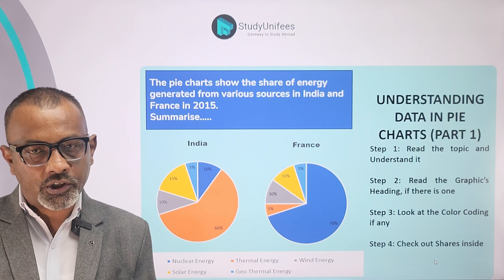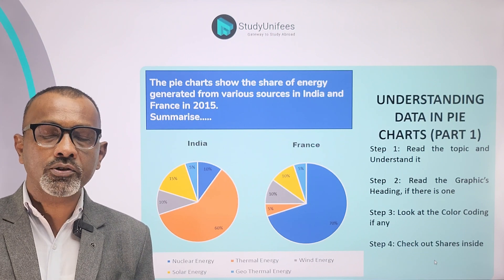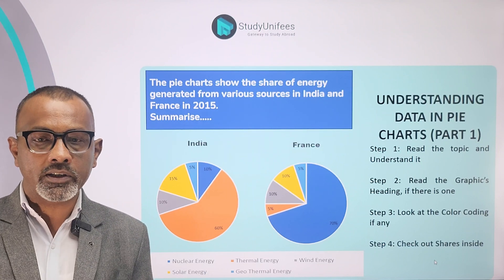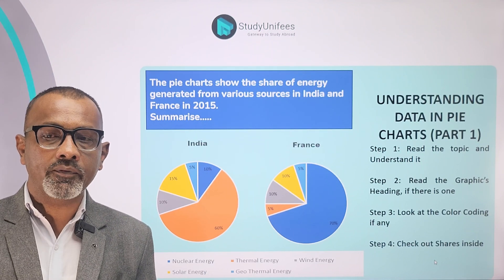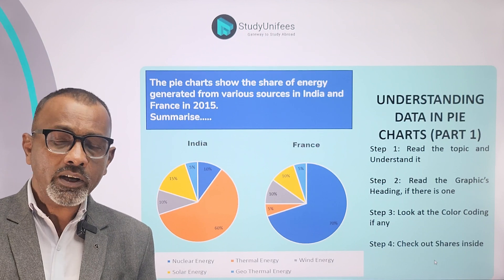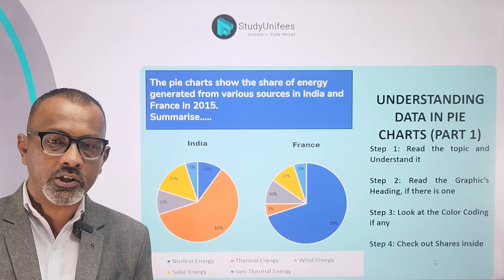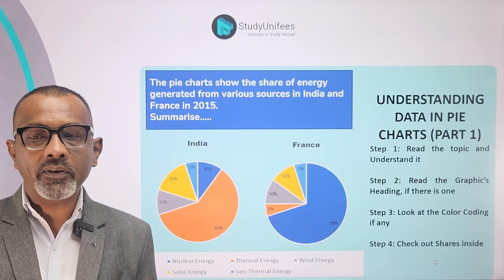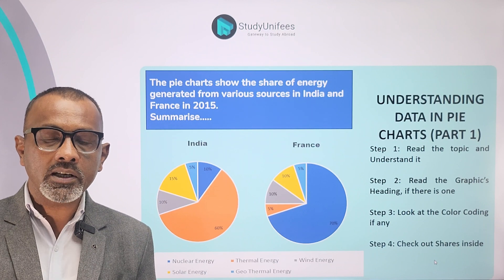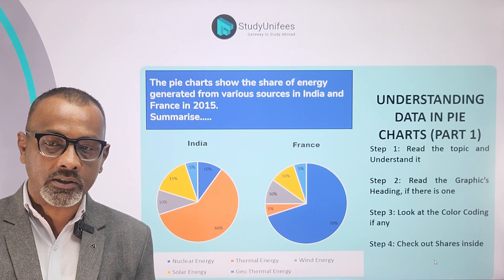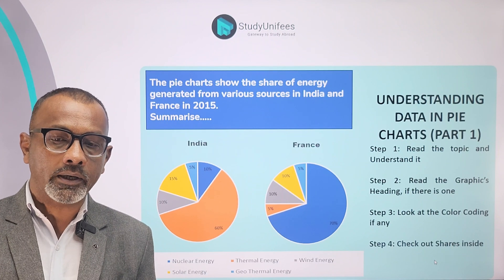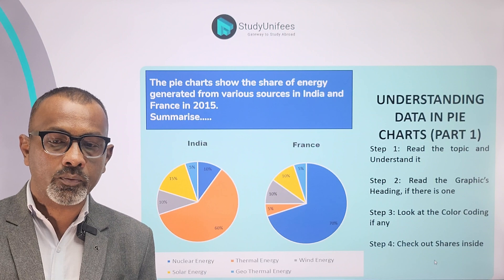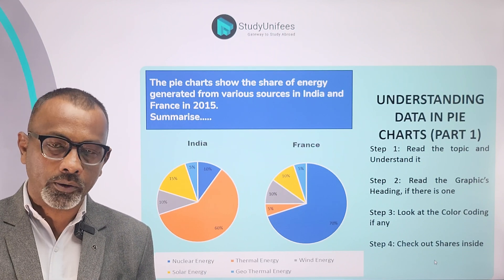Now let's look at the analysis for pie charts. The first step is to read the topic. The pie charts show the share of energy generated from various sources in India and France in 2015, so we understand that the shares of various sources of energy will be shown. Step number 2: read the graphic's headings — India and France respectively. Step number 3: look at the color coding — five different energy sources: nuclear, thermal, wind, solar, and geothermal.